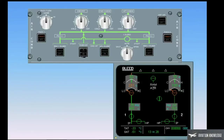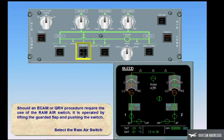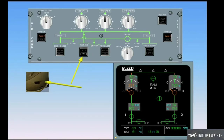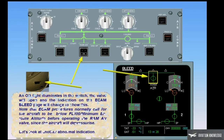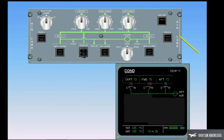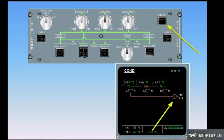Should an ECAM or QRH procedure require the use of the RAM air switch, it is operated by lifting the guarded flap and pushing the switch. An on-light illuminates in the switch, the valve will open, and the indication on the ECAM bleed page will change to show this. Note that ECAM procedures normally call for the aircraft to be below flight level 100 minimum enroute altitude before operating the RAM air valve, since the aircraft will depressurize. The hot air fault light illuminates amber when a duct overheat is detected. If this occurs, the hot air pressure regulating valve and the trim air valves automatically close.